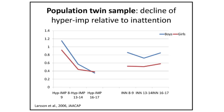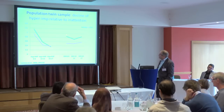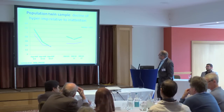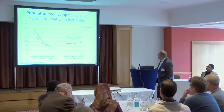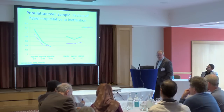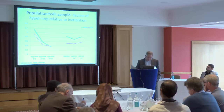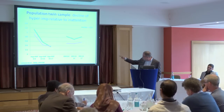You can see the change in symptom profiles in a large population twin sample from Sweden. Looking at hyperactivity-impulsivity symptoms from ages 8–9 through to 16–17, there is a clear decline — boys have slightly more than girls, but both decline with age. In contrast, inattentive symptoms show virtually no change in either boys or girls as they get older. Other datasets taking these trends further into adulthood show these patterns continuing.